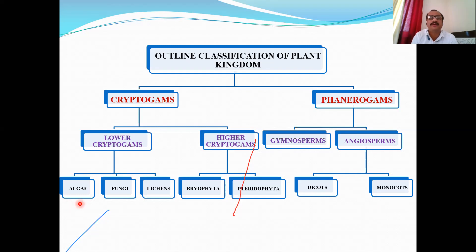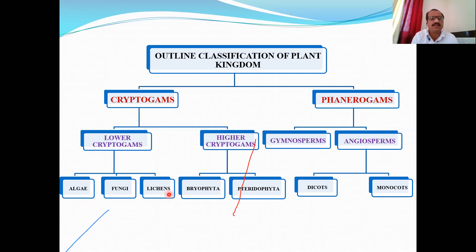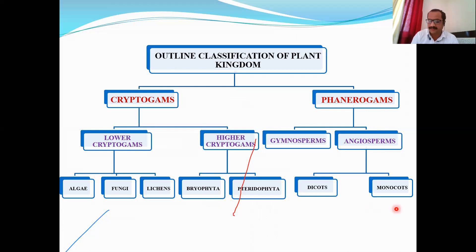To summarize: all plants belong to either cryptogams or phanerogams. Cryptogams are non-flowering, seedless plants of two types — lower cryptogamae (Thallophyta: algae, fungi, lichens) and higher cryptogamae (Cormophyta: Bryophyta and Pteridophyta). Phanerogams are flowering, seed-producing plants also called Spermatophyta. This is the outline classification of the plant kingdom.